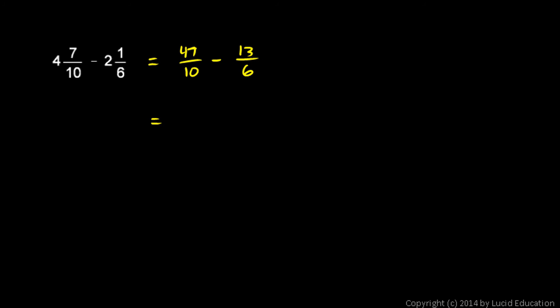Now I need a common denominator and you might see that it will be 30. I could use 60. That comes to mind because 10 times 6 is 60. But 30 is better because it's the least common denominator. And you can see that 30 is a multiple of 10 and it's a multiple of 6.